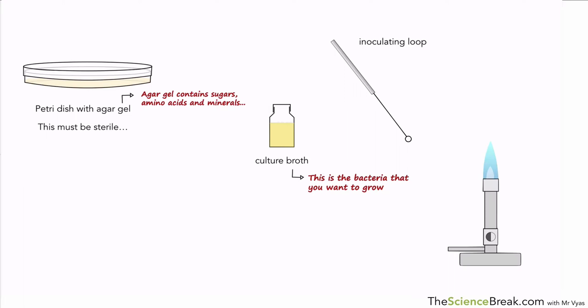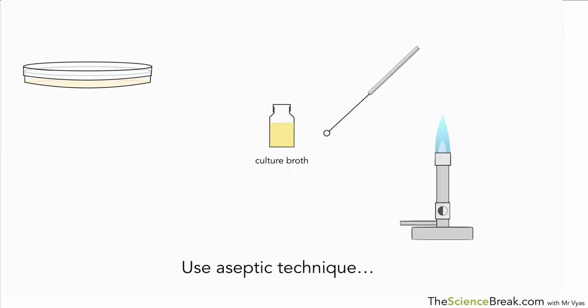Remember, the petri dish must be sterile so that there's no contamination. The culture broth must only contain the bacteria that you want to grow. We have to be very careful when we do this experiment of growing our own microorganisms. We must use something called aseptic technique. That's the way we do the experiment or grow the bacteria, making sure that we don't get contamination. You need to know the steps, so we're going to go through the steps visually here.